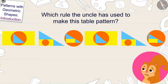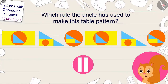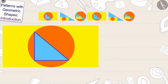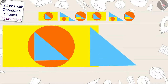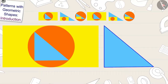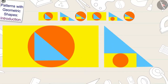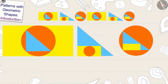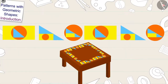Children, can you tell which rule Uncle has used to make this table pattern? If you want, you can stop the video and think about the answer. To make this pattern, each time Uncle made the inside of the previous mark as the outermost of the next mark. And then made the remaining two shapes inside according to the order made in the previous mark. By repeating this rule again and again, Uncle has patterned his table.